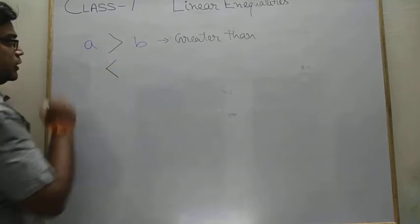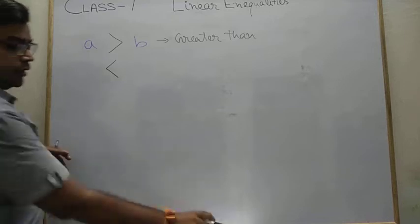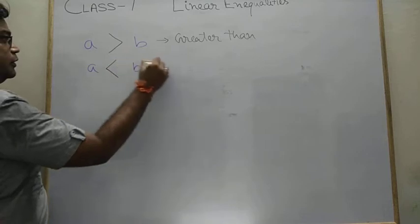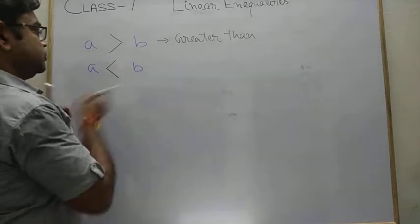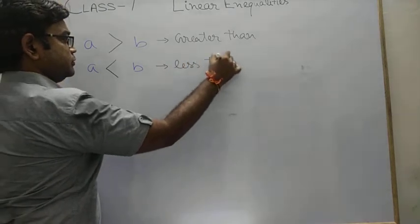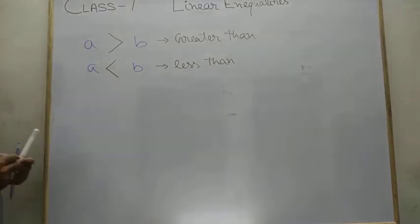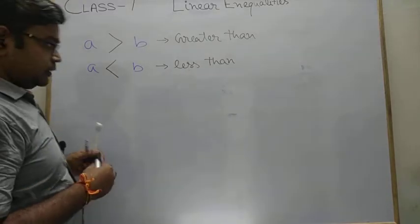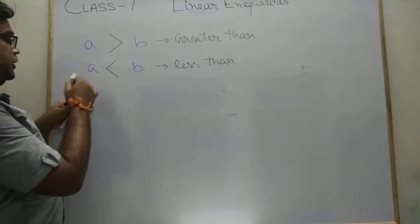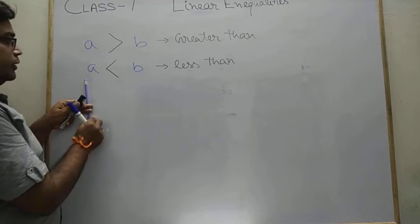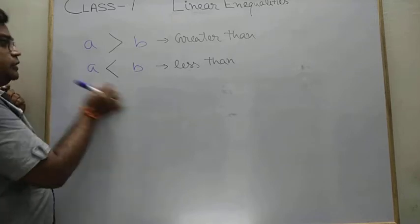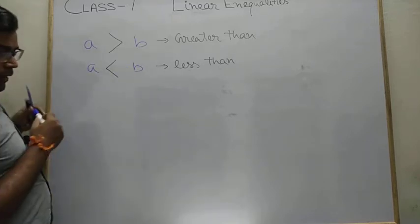Similarly, we have the opposite sign, which means 'less than.' Suppose I am using A and B — this symbol means A is less than B. For example, the price of this pencil is less than this pin. The value of A is smaller than that of B.